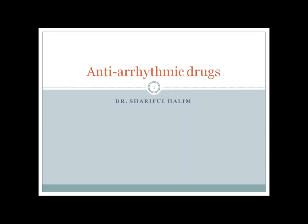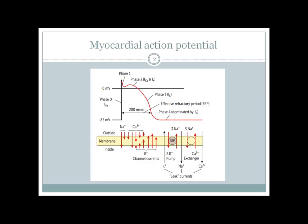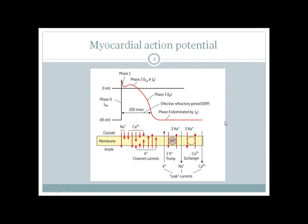Hello everyone, welcome. Today I'll discuss a very important topic in pharmacology: antiarrhythmic drugs. Before going to the drugs, let's first review the physiology of the action potential of cardiac muscle. The cardiac muscle action potential has four phases — phase zero to phase four — and phase zero is dominated by a voltage-gated influx of sodium, which is responsible for the rapid upstroke.